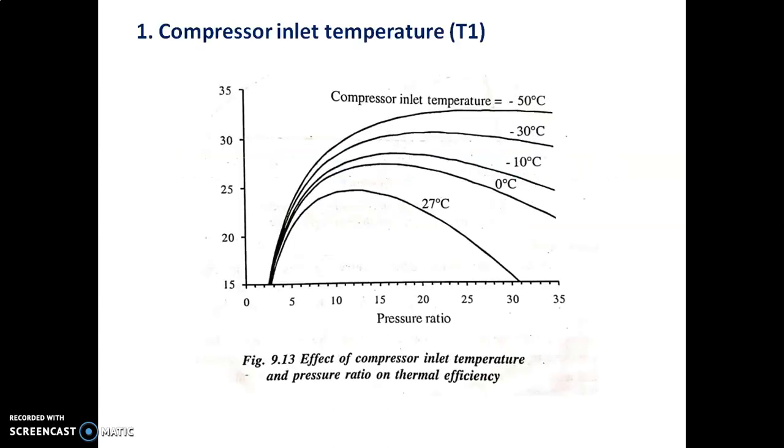First, let's start with compressor inlet temperature. An increase in compressor inlet temperature T1 increases the work input to the compressor. Due to the compression process, the curve is shifted toward the right side, so thermal efficiency of the cycle is reduced. Looking at the thermal efficiency versus pressure ratio diagram, as inlet temperature increases, efficiency decreases.